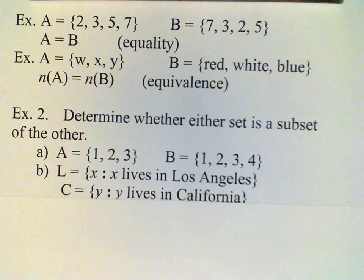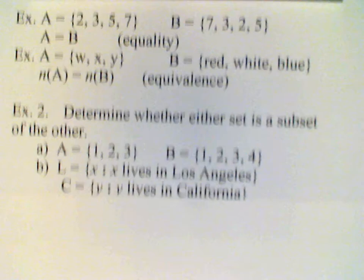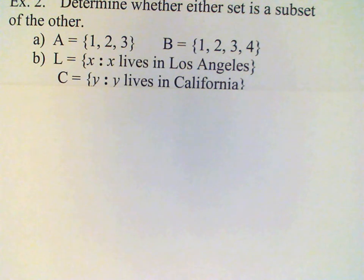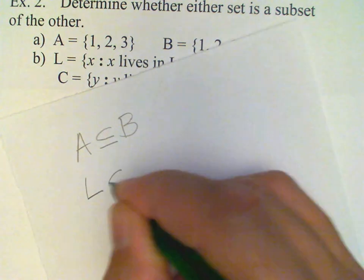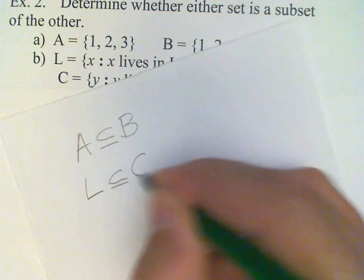Now let's consider these two sets here written in set builder notation. L is the set of people who live in Los Angeles, and C is the set of people who live in California, and clearly L is a subset of C because Los Angeles is located in California. And so we can write L is a subset of C.